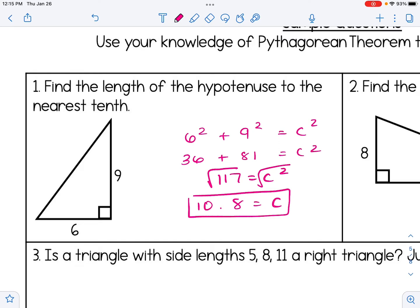And I get 10.8 is equal to C here. Now remember, the hypotenuse should always be the largest side of a right triangle. So it makes sense that we had a side of 9 and we had to get something bigger than that as our answer.